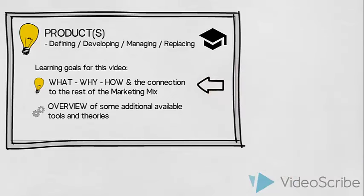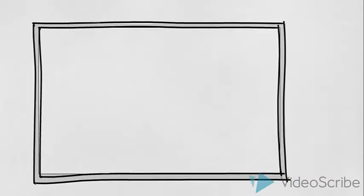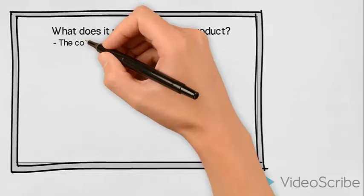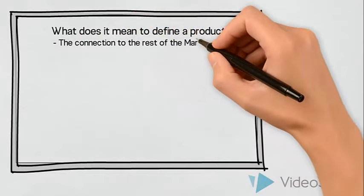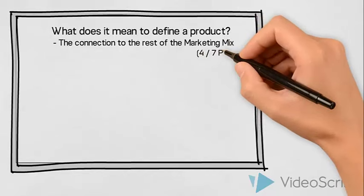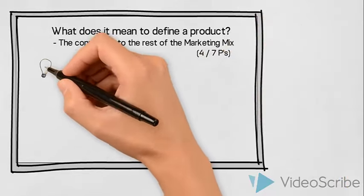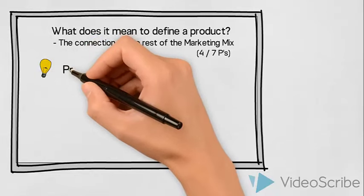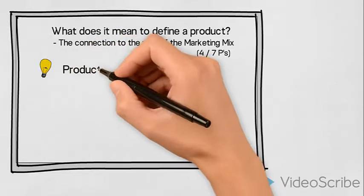So let us begin. What is the meaning of defining a product and what is the connection to the rest of the marketing mix? When you are asked to design the marketing mix, you need to make decisions on four or seven core elements, also known as the four or the seven Ps. First of all, issues concerning the product, which is what this video will address.